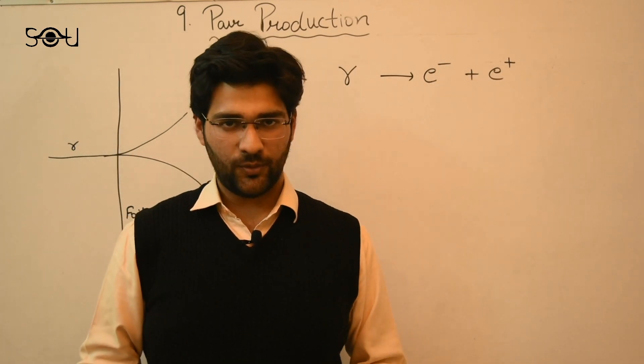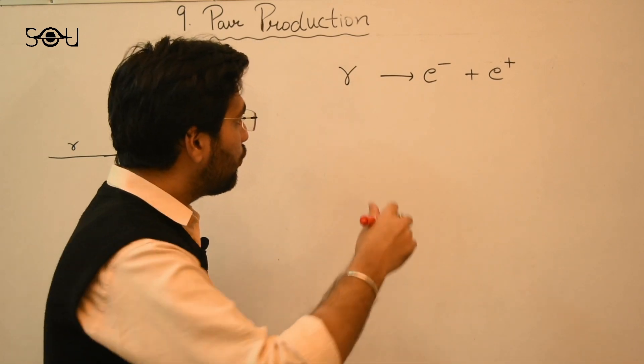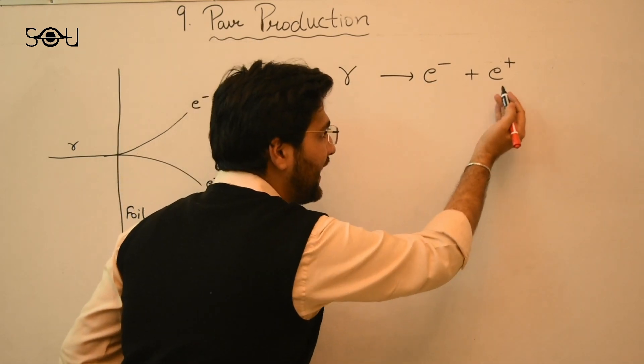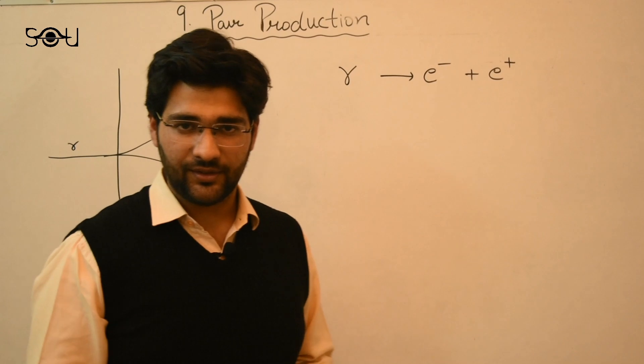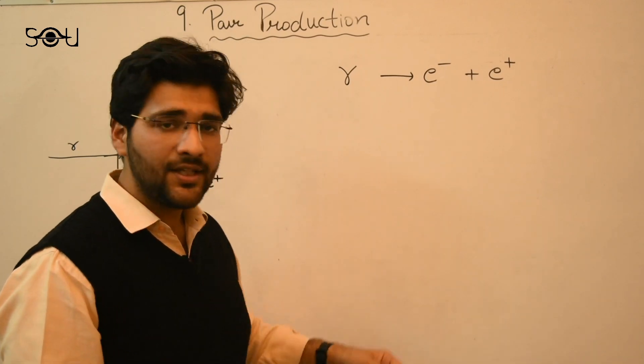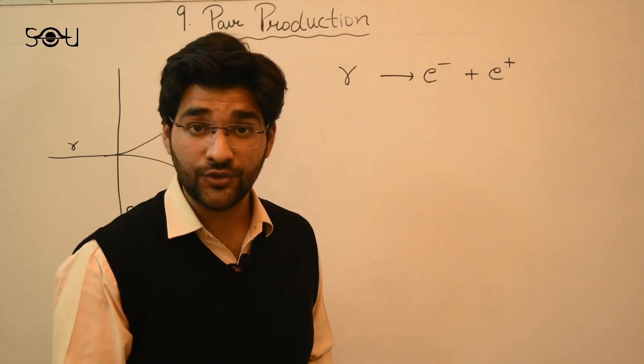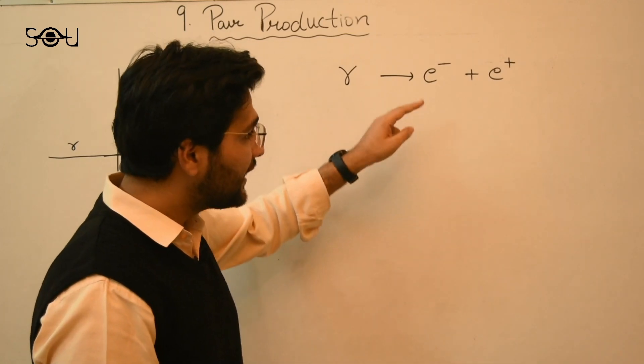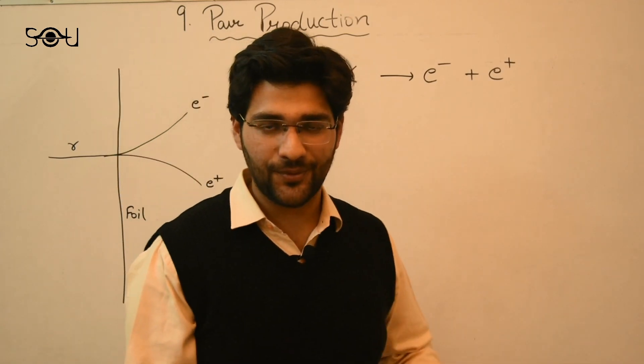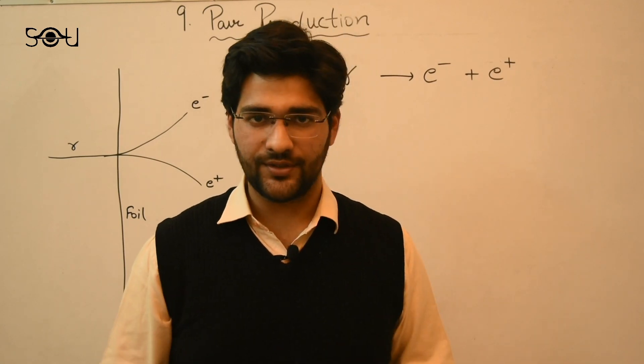Now you may ask a very simple question that is why only a particle and its antiparticle is produced in pair production? For example, in this case, why only an electron and a positron? Why not two electrons or two positrons, or a single electron or a single positron? The answer is conservation laws.